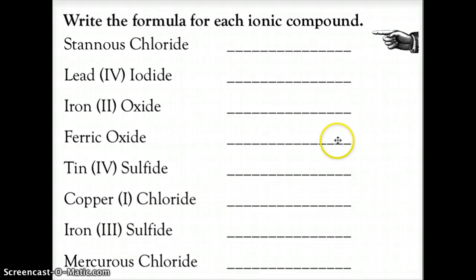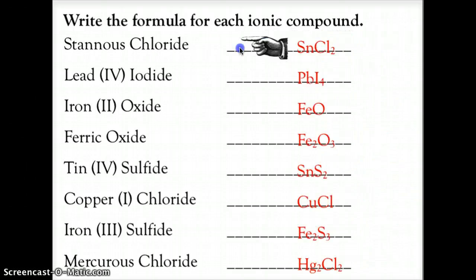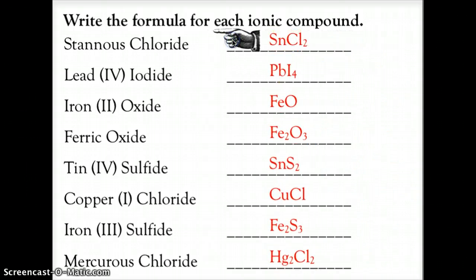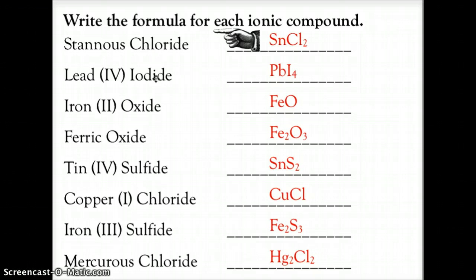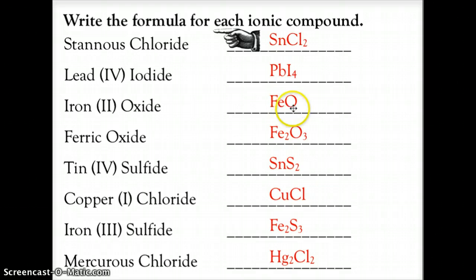Welcome back — let's see how you did with your naming and formulas. Stannous chloride: stannous is tin in its plus-two form, and chloride is negative-one, giving us the formula SnCl₂. Lead(IV) iodide: lead is plus-four, iodide is minus-one, so you need four iodides, giving PbI₄. Iron(II) oxide: iron is plus-two, oxide is minus-two, so they are one-to-one, giving FeO.